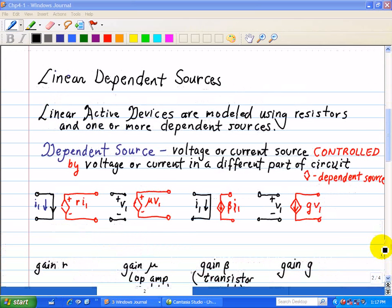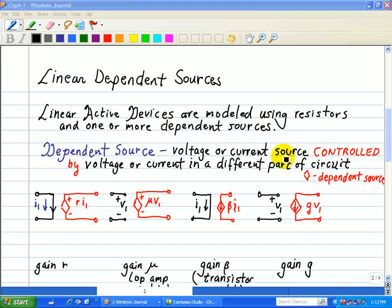Linear active devices are usually modeled using resistors and one or more dependent sources. A dependent source is a voltage or current source controlled by a voltage or current in a different part of a circuit.